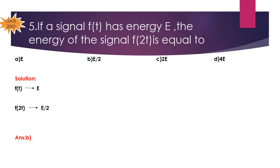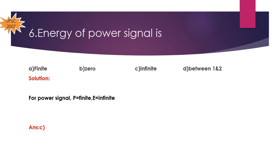Problem 5: If a signal F(t) has energy E, then the energy of the signal F(2t) is E/2. Option B is the correct answer. Problem 6: The energy of a power signal is infinite, because for a power signal, power is finite but energy is infinite. Option C is the correct answer.